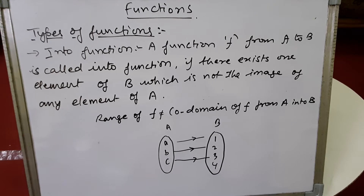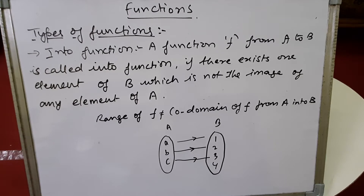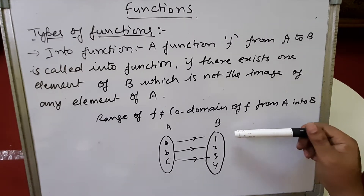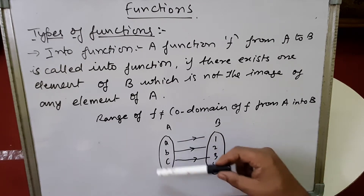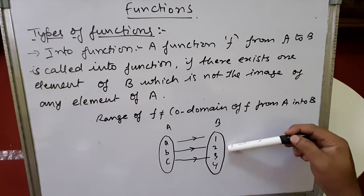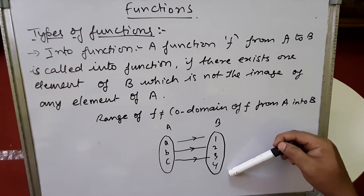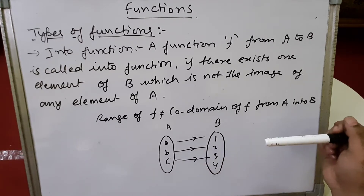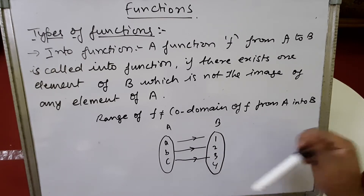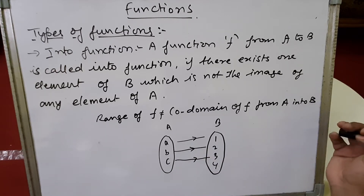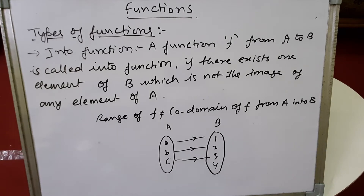Next is the into function. A function f from A to B is called into if there exists at least one element of B which is not the image of any element of A, or equivalently, the range of f is not equal to the co-domain. For example, if the domain A = {a, b, c} and co-domain B = {1, 2, 3, 4}, and element 4 has no pre-image in A, the function is into. If 4 also had a pre-image, the range would equal the co-domain and it would be onto.